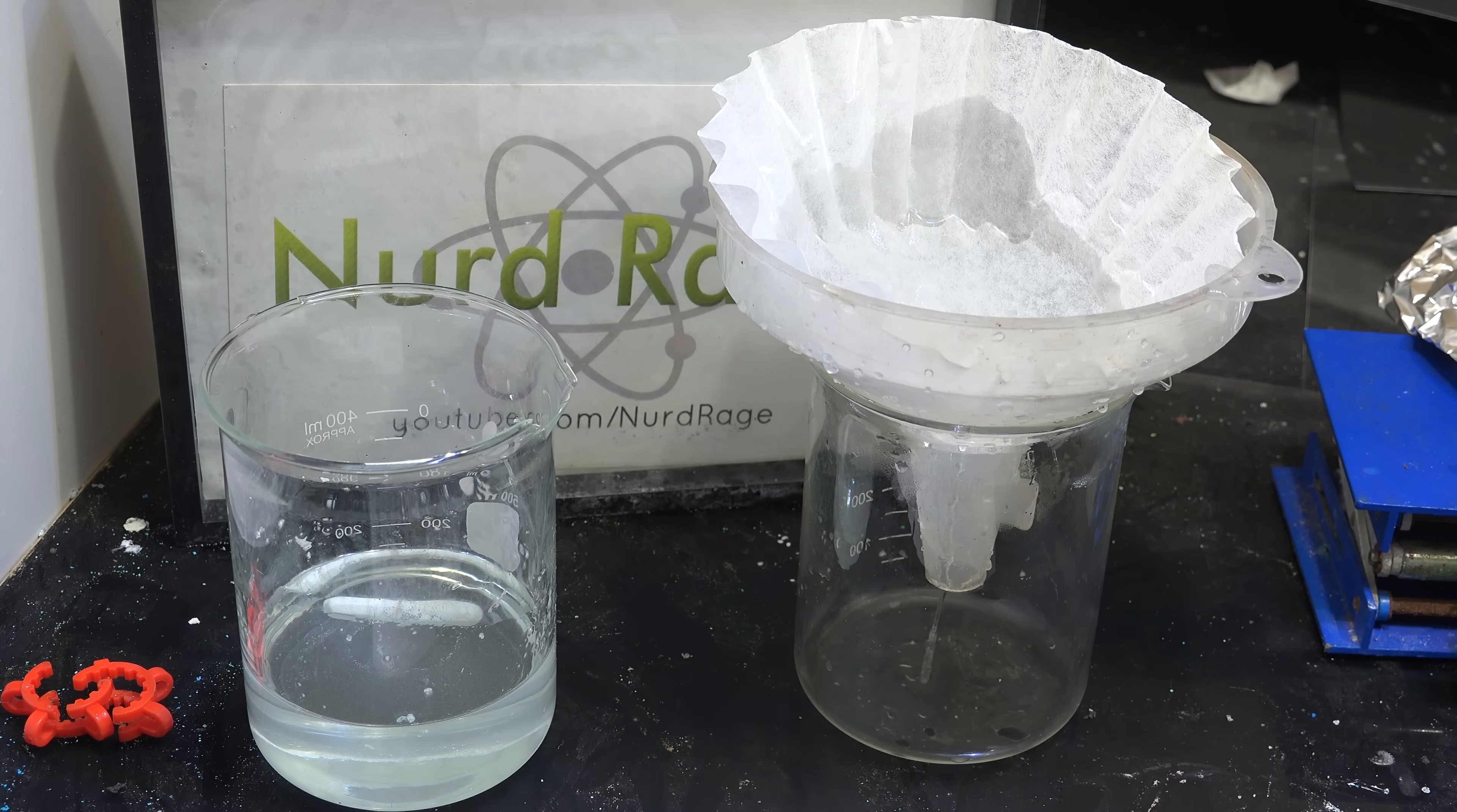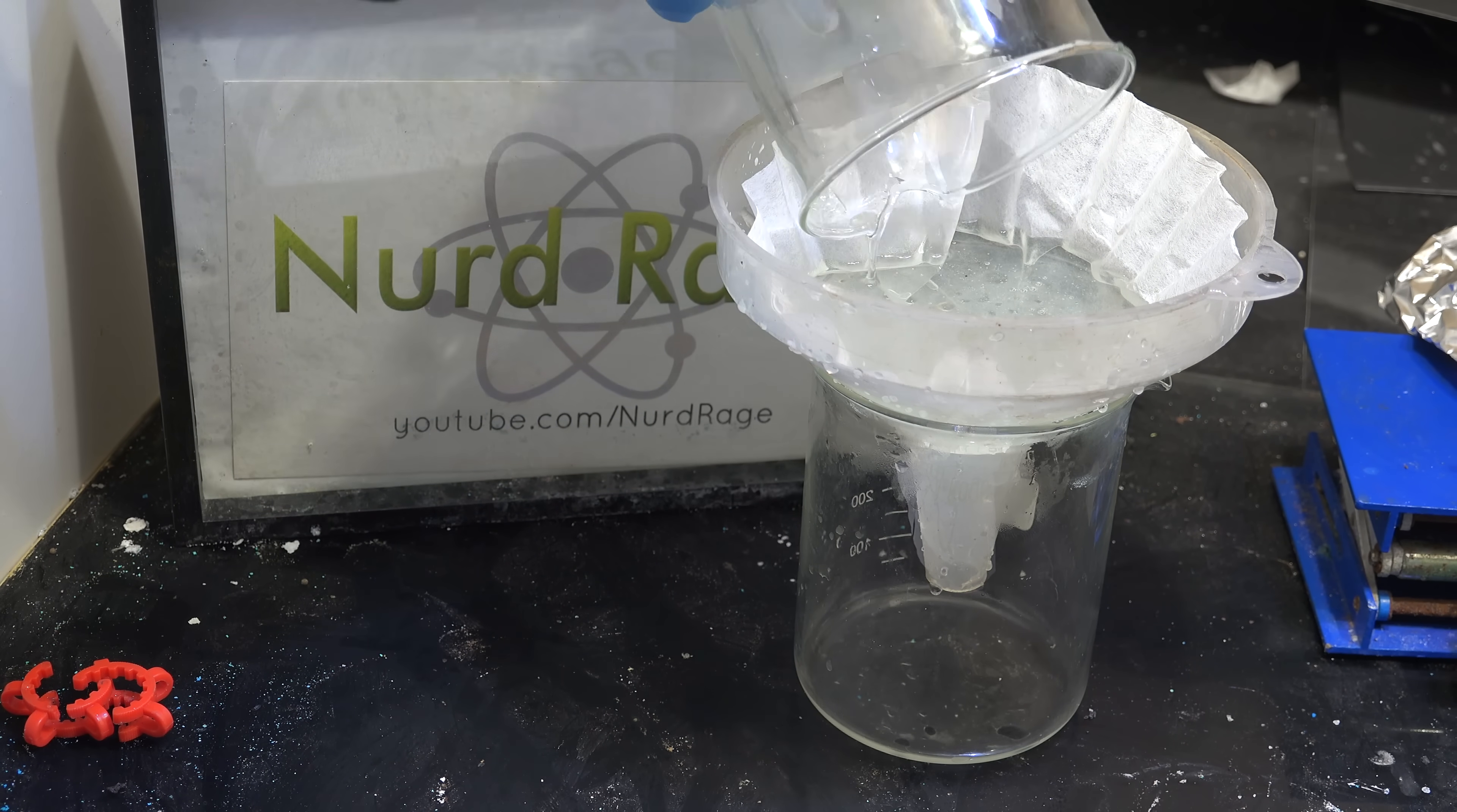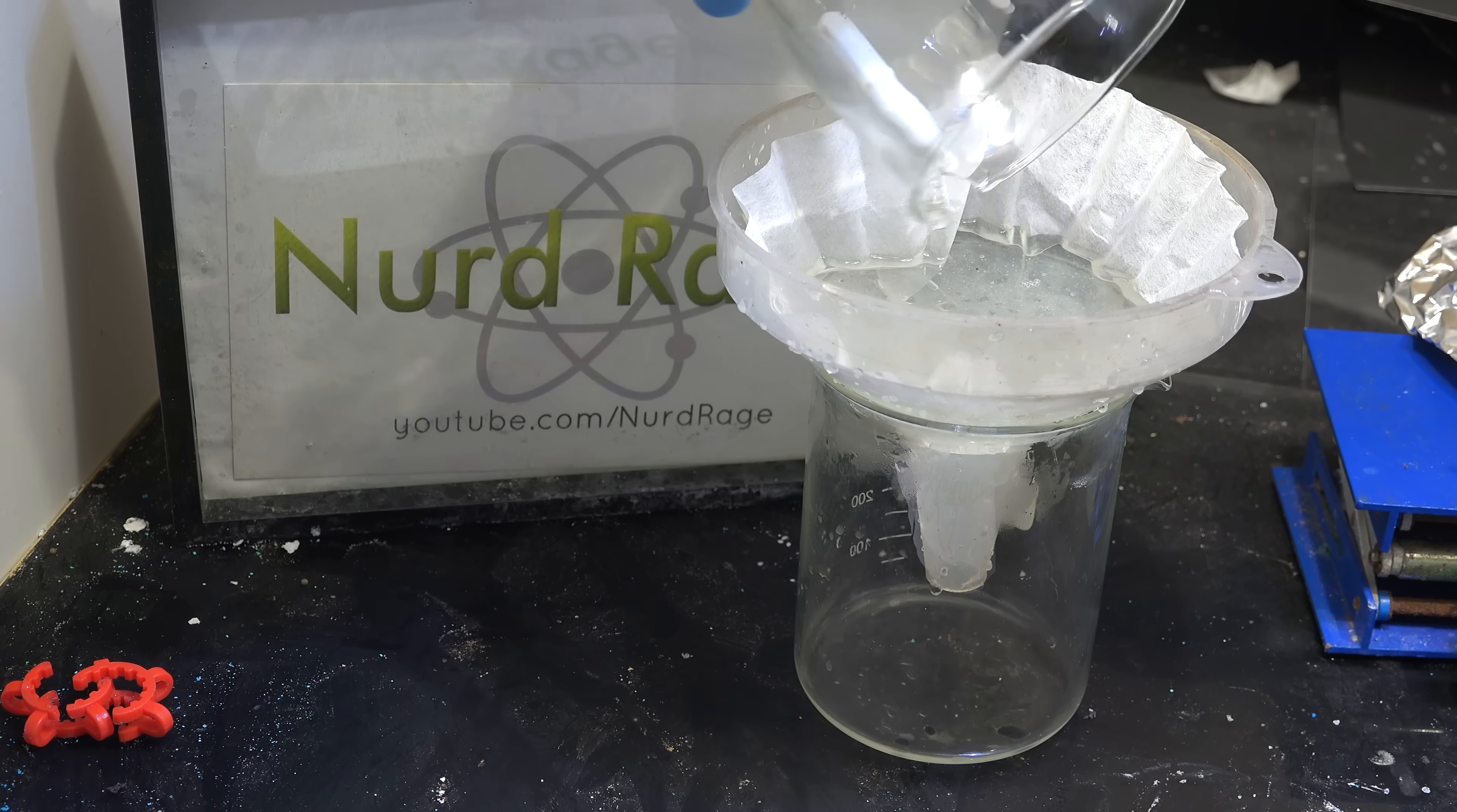The silica gel in cat litter might not be all that pure, so I recommend filtering to remove any insoluble particles. This should be done while the solution is still hot.